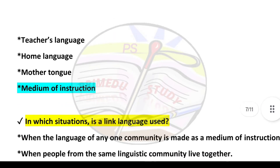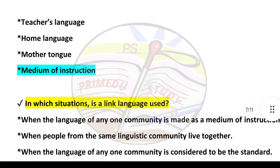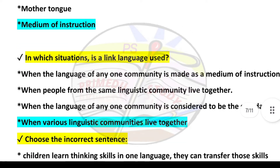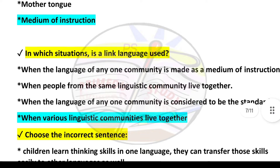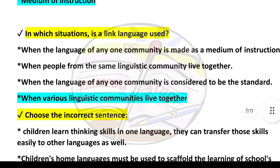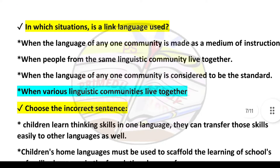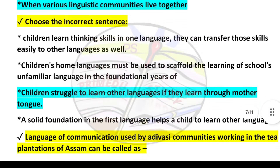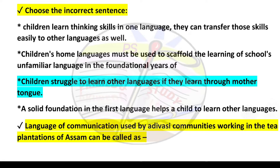Next question: In which situation is a link language used? Answer is option number four: when various linguistic communities live together. Next question: Choose the incorrect sentence — answer is option number three: children struggle to learn other languages if they learn through mother tongue.